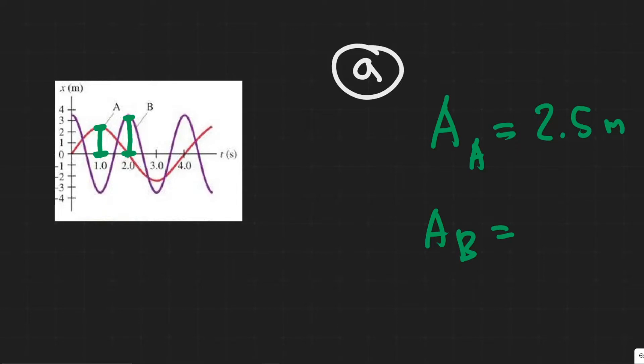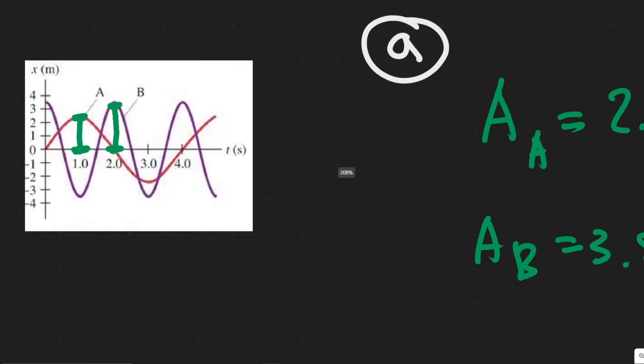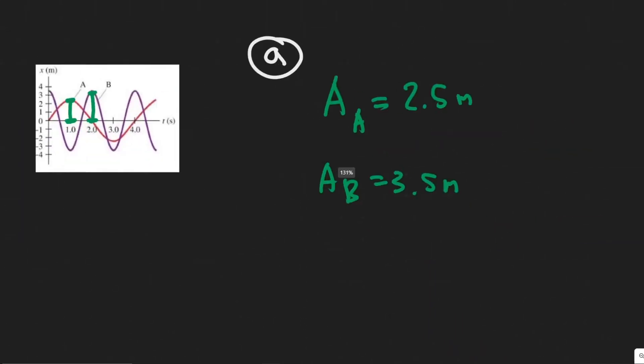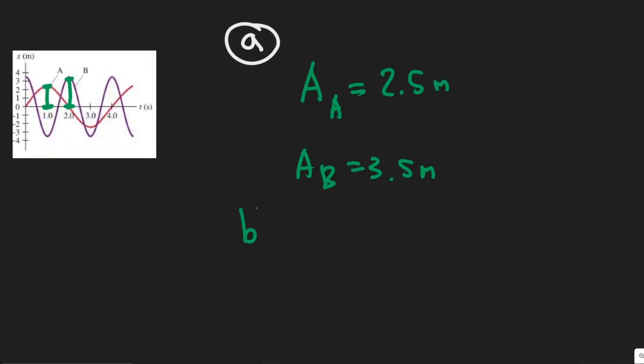For B, it is equal to 3.5 meters. Hopefully you can see that. But yeah, so basically just the farthest distance away or the extent it goes is your amplitude. So 3.5 and 2.5 respectively.